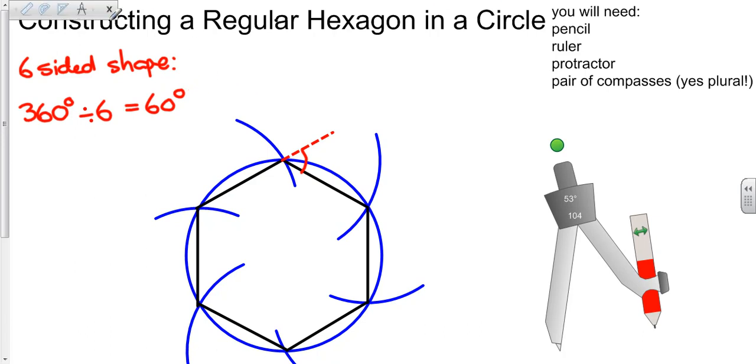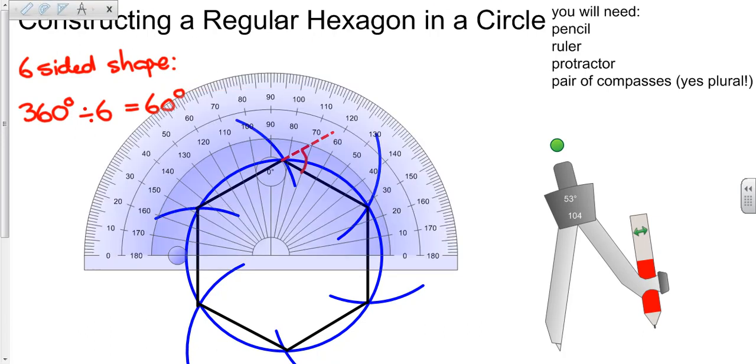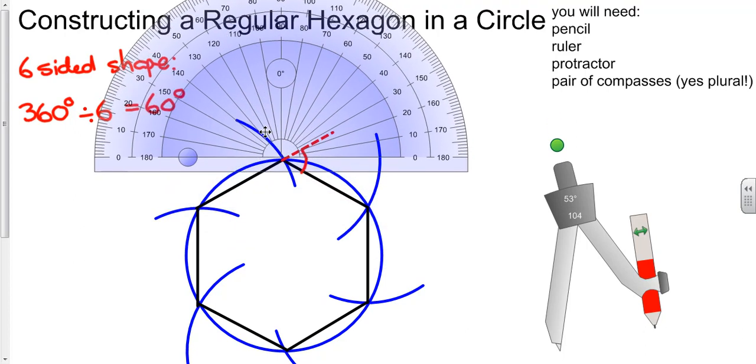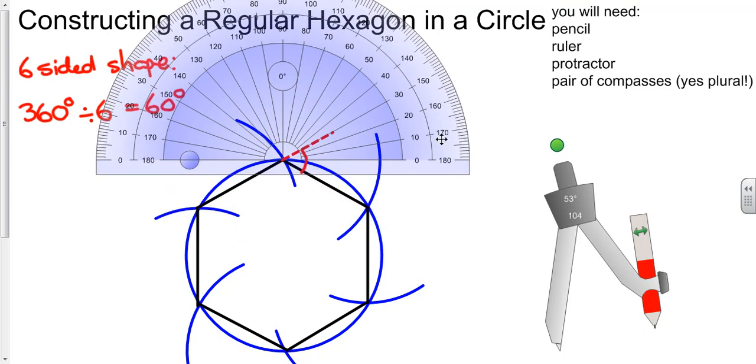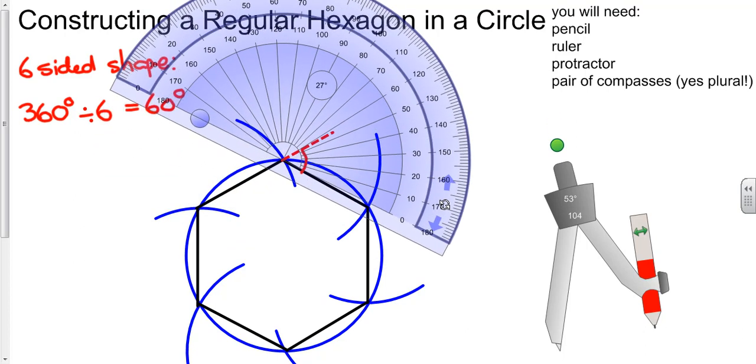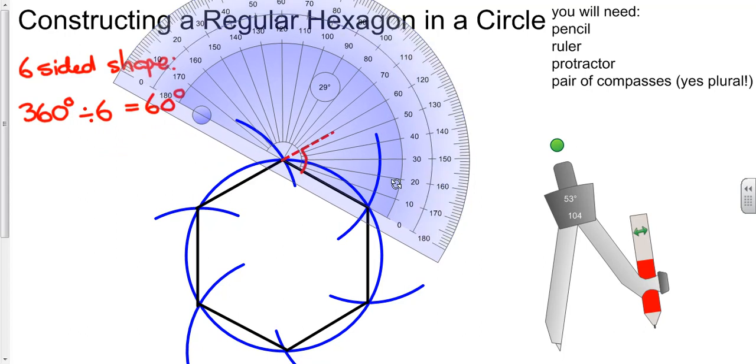So if I have done this correctly, then if we measure this angle here, put on the point there, rotate it around... there you go, 60 degrees. So that exterior angle is 60 degrees. You can go around and check the rest to see if yours has worked out okay as well.